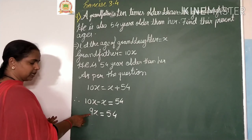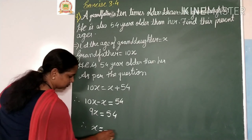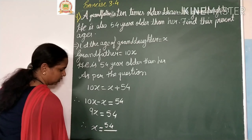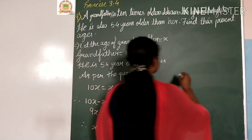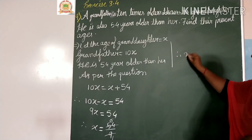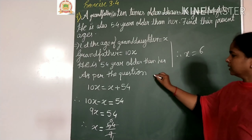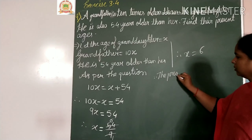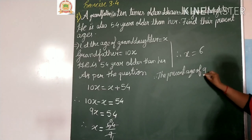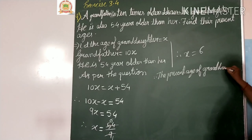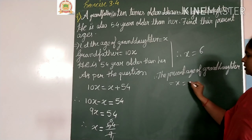Therefore x equals 54 divided by 9, which equals 6. So x equals 6, meaning the age of granddaughter is 6 years.